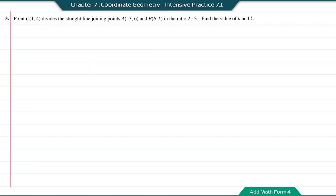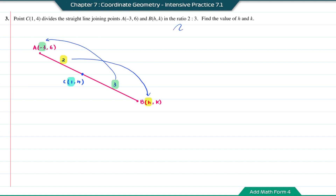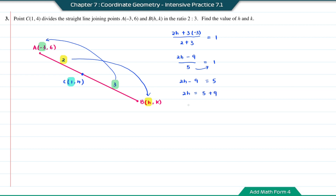Question 3. Point C(1, 4) divides the straight line joining A(−3, 6) and B(H, K) in the ratio 2 to 3. Find H and K. AC is 2 and CB is 3. For H, using x-coordinates: (2H + 3×(−3)) divided by (2+3) equals 1. So (2H − 9) over 5 = 1, giving 2H − 9 = 5, so 2H = 14 and H = 7.